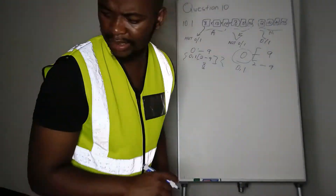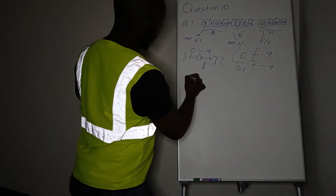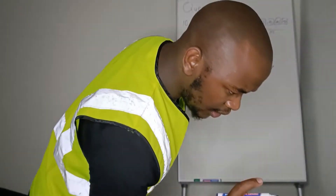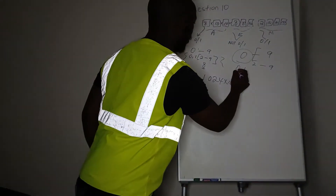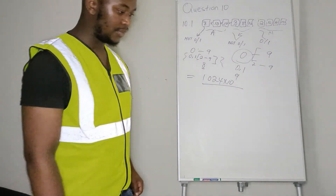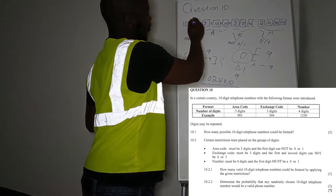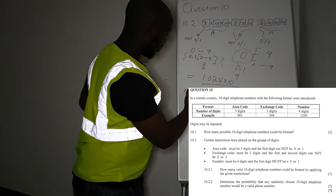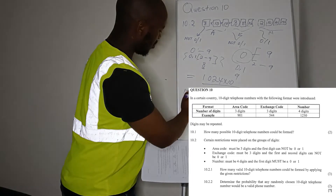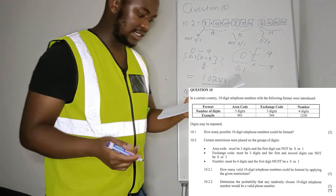So the answer to Question 10.2.1 is 1024 times 10 to the power of 9. This was Question 10.2.1 and now we have Question 10.2.2.